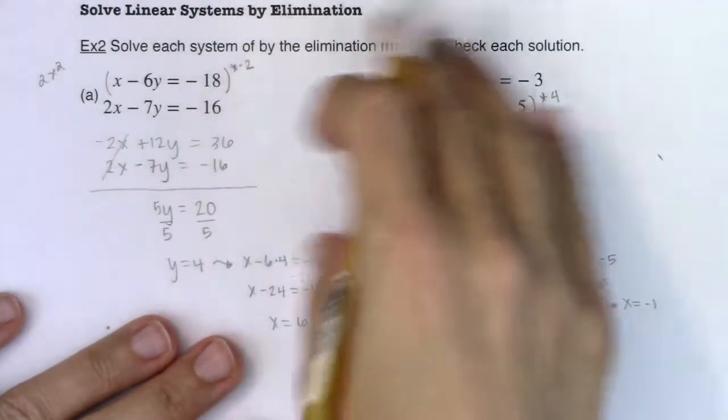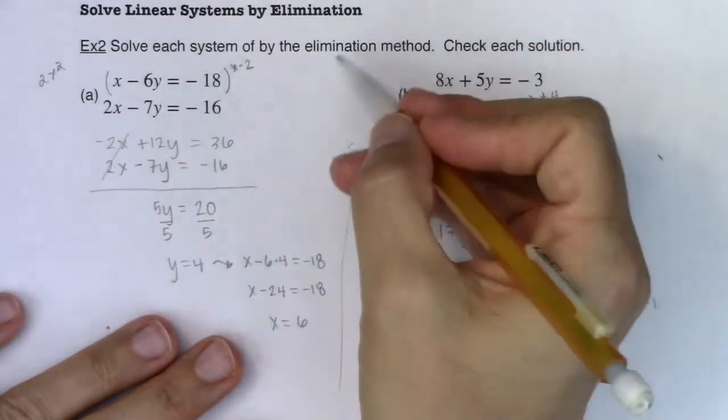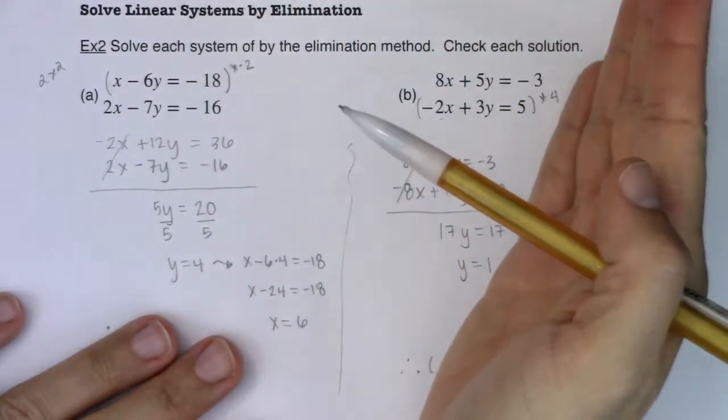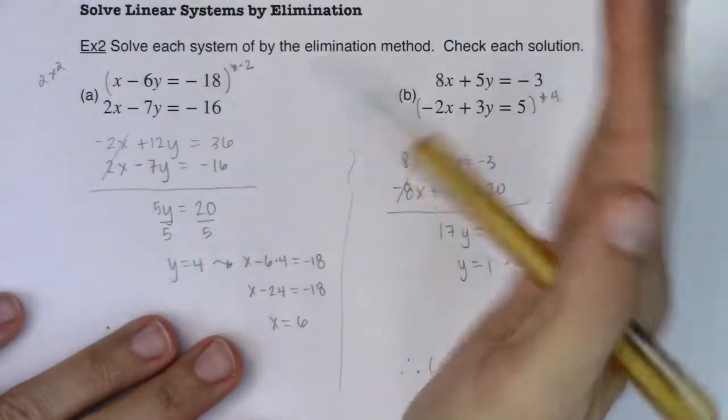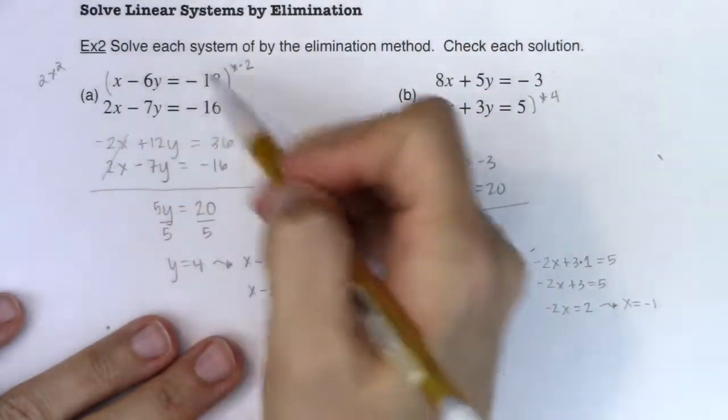alright, this is the third method. We've got substitution elimination and graphing. Actually, there's a fourth one, using matrices that we're not going to get to. But let me just show you the graphing one.